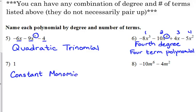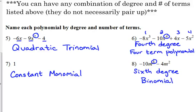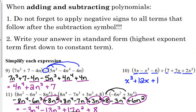Number seven is a very simple example: the number one. One is a constant — there's no variable — and it is a single term, so that is a constant monomial. Number eight has degree six and there are two terms, so that is a sixth degree binomial. Pretty simple, so let's keep going.